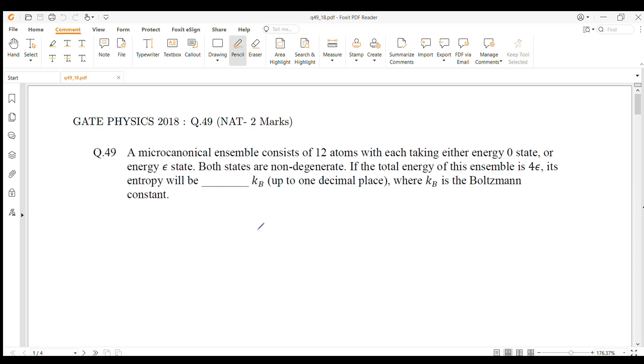Hello everyone, in this video I shall discuss the solution of question number 49 of GATE Physics 2018. This is a numerical answer type question. A microcanonical ensemble consists of 12 atoms with each taking either energy 0 state or energy epsilon state. Both states are non-degenerate. If the total energy of this ensemble is 4 epsilon, then we need to find out the entropy.